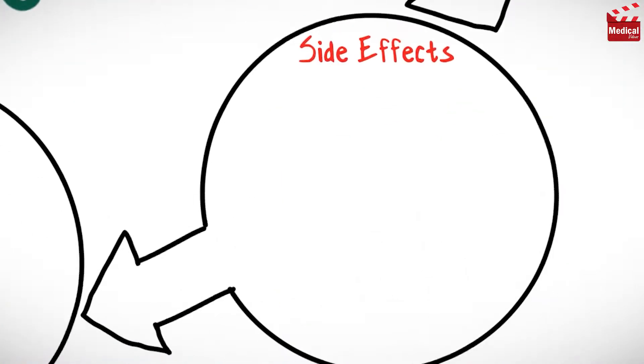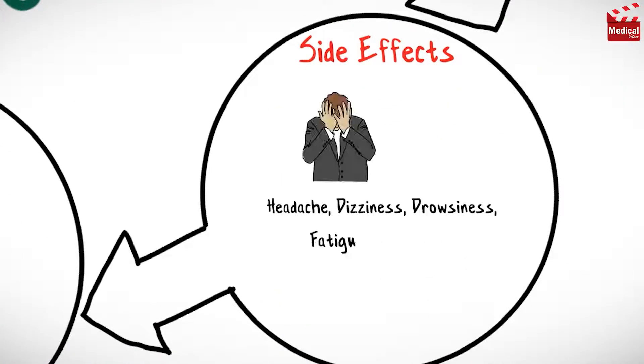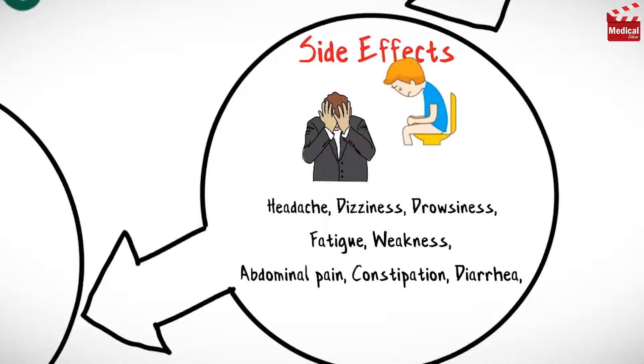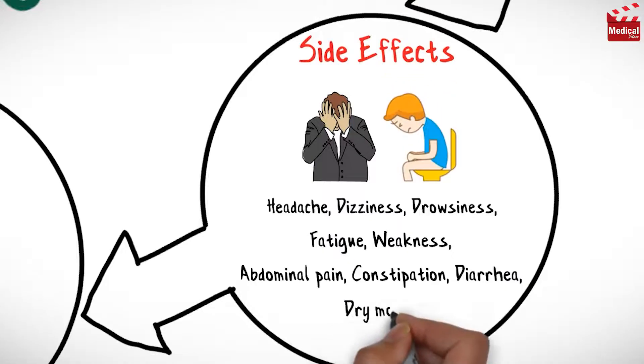Ondansetron may cause headache, dizziness and drowsiness, fatigue and weakness, abdominal pain, constipation or diarrhea, and dry mouth.